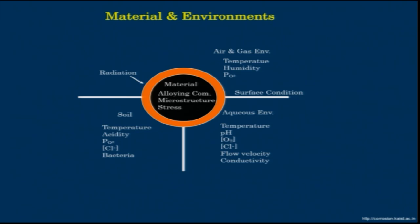Coming to materials and environments — when we think about materials, the first thing that comes to a material scientist is the material tetrahedron. In the material tetrahedron, we see structure on one side, then processing, then performance, and then properties. Within structure, we can also include composition as a criterion. For a particular composition, structure, properties, performance, and processing are all interrelated.